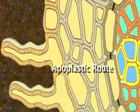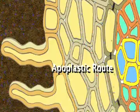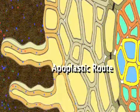The first, called the apoplastic route, is taken by the water and minerals that are absorbed into the cell walls of the root hairs.